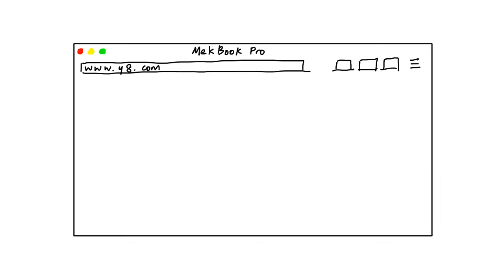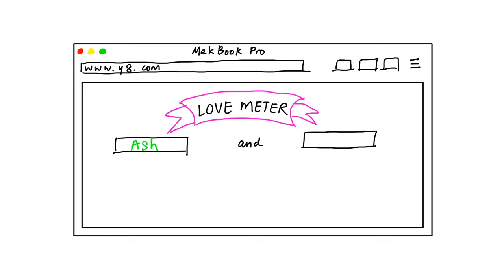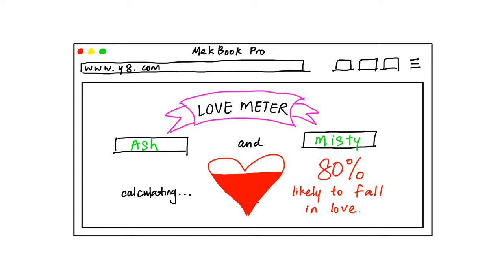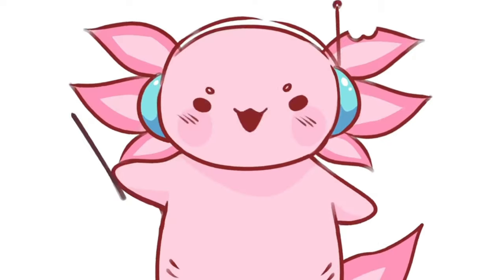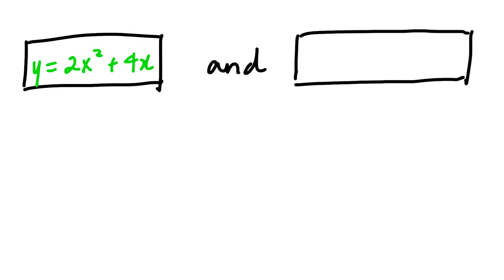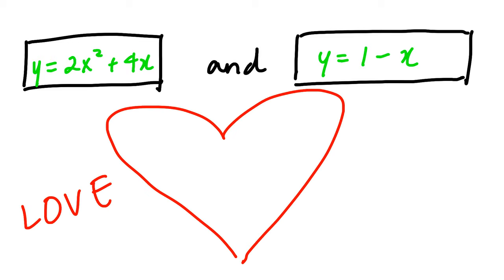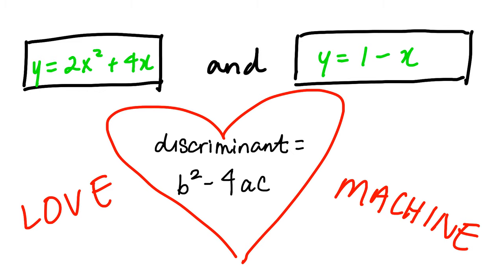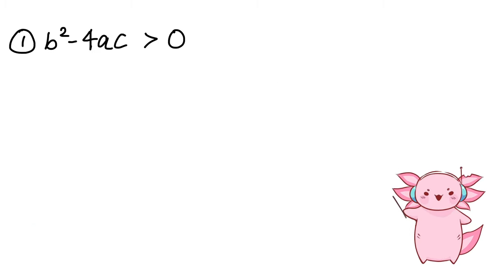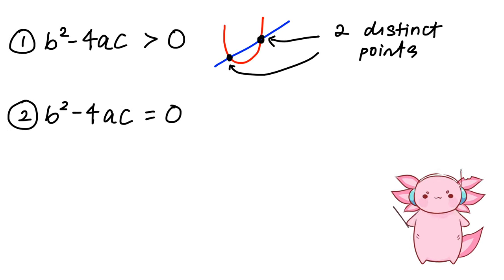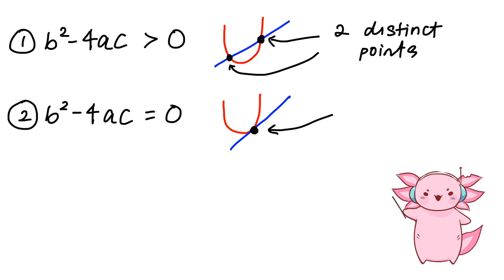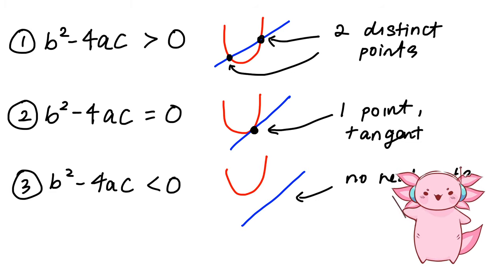Imagine a love machine where you put two equations in and it calculates the discriminant using the formula b² − 4ac. If the discriminant is greater than 0, the two equations intersect at two distinct points. If it equals 0, it touches at one point, which is a tangent. And if the discriminant is less than 0, that means it does not touch at all.